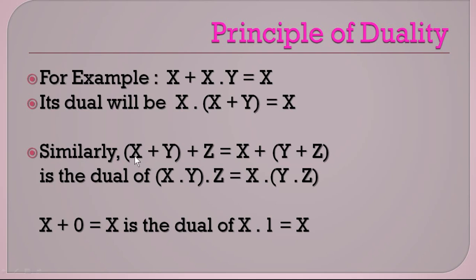Similarly, another example: x + y + z = x + y + z. To convert this, all the plus signs are converted to dot signs. So the dual is x·y·z = x·y·z.